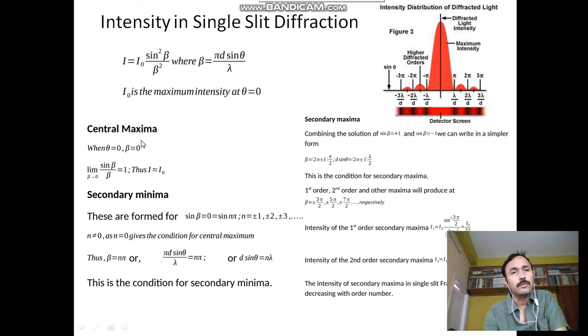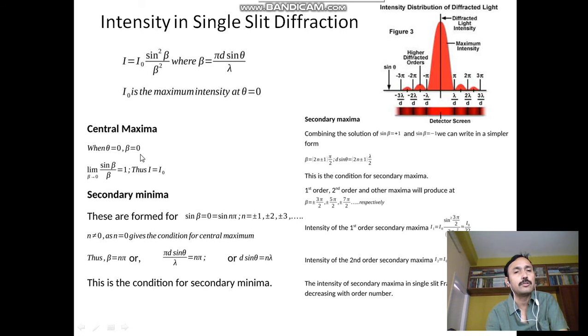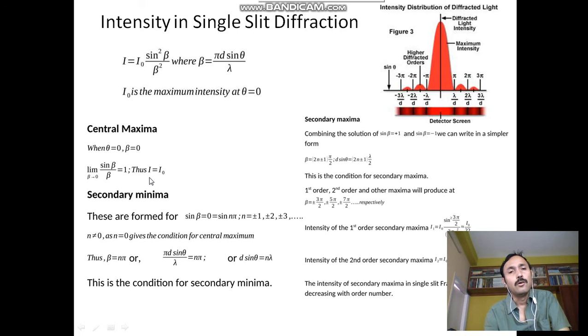For the central maximum calculation: when θ = 0, β = 0. Taking the limit as β tends to 0, sinβ/β = 1. Thus I = I₀, confirming the central maximum has maximum intensity.